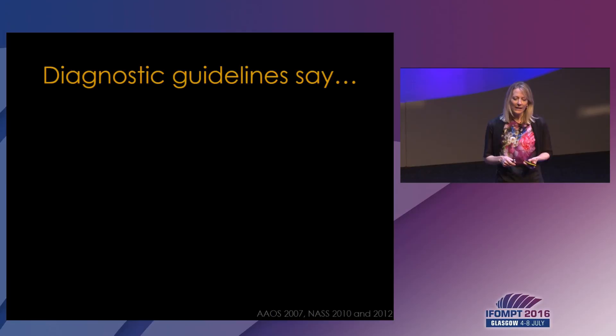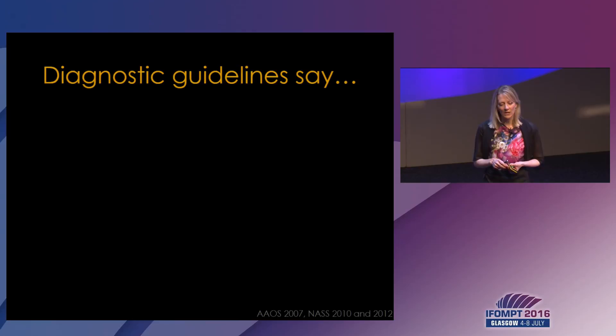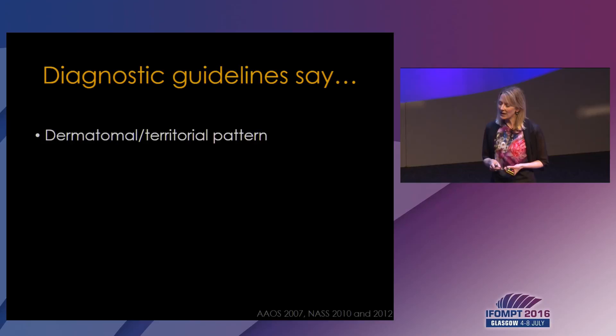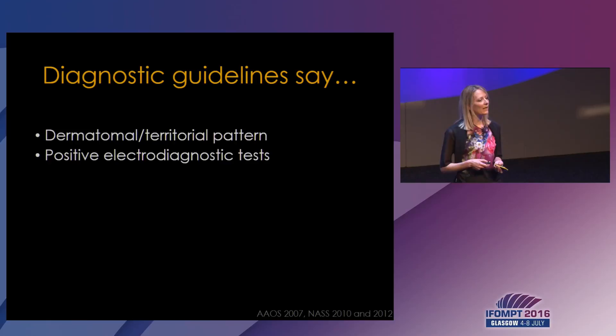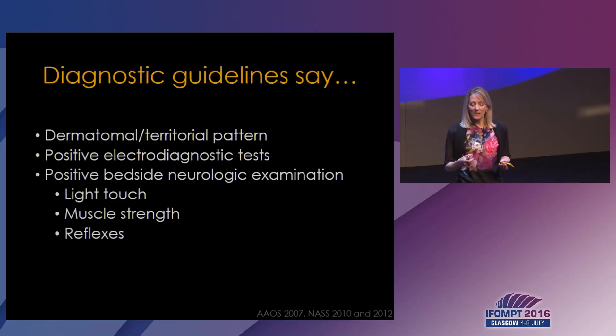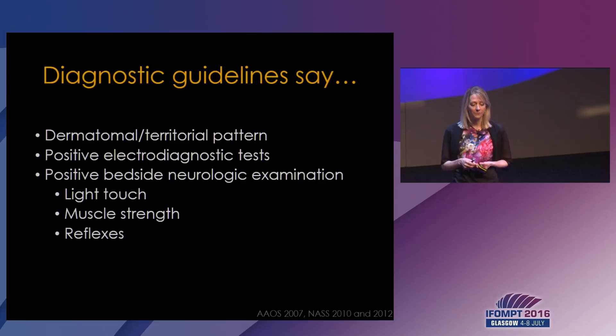When I went to school it was quite simple to diagnose patients with entrapment neuropathies. If you follow the diagnostic guidelines today for carpal tunnel syndrome and radiculopathies, the guidelines say that patients should have a dermatomal or territorial pattern of symptoms, positive electrodiagnostic tests with slowed nerve conduction velocity, and a positive bedside neurological examination — meaning difficulties with light touch, muscle strength, and reflexes.